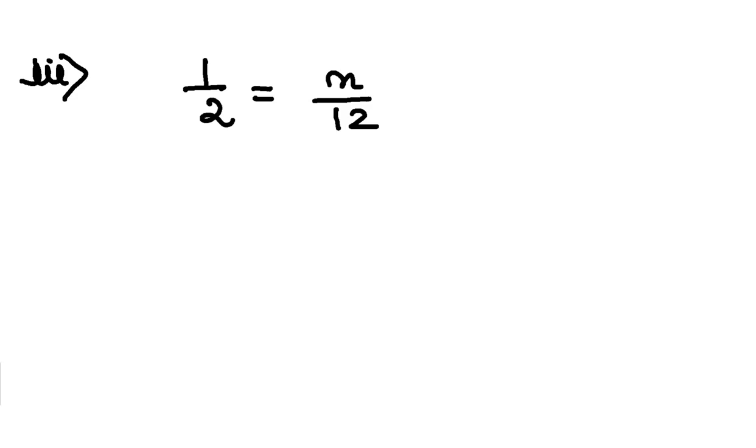Accordingly, part 3: 1 by 2 is equal to n by 12. Very very simple. 2, 12, 6 times. If I cross multiply, n is simply 6, isn't it.